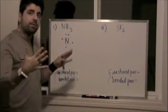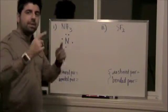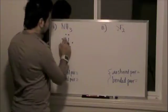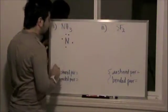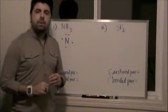And then once we draw our fifth one, sixth one, seventh one, eighth one, that's when we start to pair them up. And I'm going to tell you why we're going to do that in a second. So here we have our five valence electrons for nitrogen.